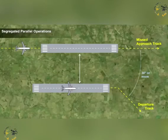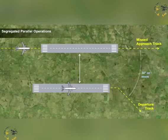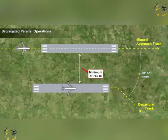Segregated operations are permitted when the normal departure track diverges immediately after takeoff by at least 30 degrees from the missed approach track of the adjacent approach. The minimum distance between runways for segregated operations is 760 meters.